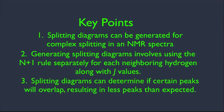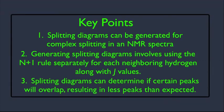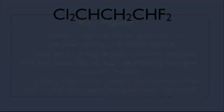And number three, splitting diagrams can determine if certain peaks will overlap, resulting in fewer peaks than expected. Remember, we learned before that sometimes the n+1 rule doesn't work. We're going to see in this lecture why it doesn't work, but let's do it via example.